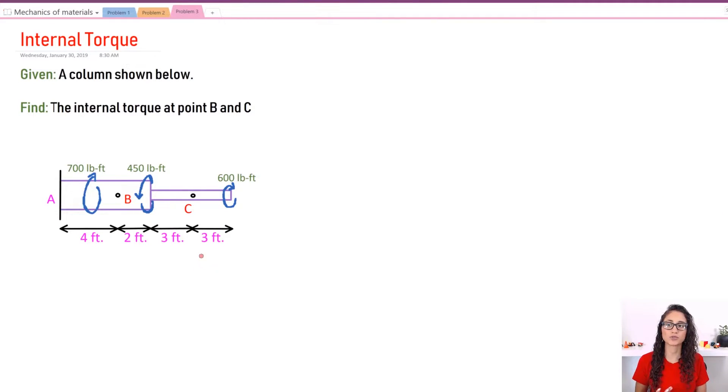Okay guys, so we're given this and we need to calculate the internal torque at point B and C. This is a really easy straightforward problem. So let's first determine at C and let's cut at C. So if I cut at C, what do we have? Let's do at C.